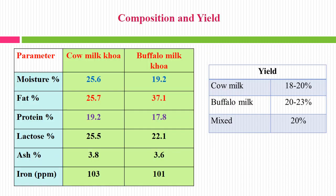Now we will see the composition and yield of Khoa. In the left side table, moisture content for cow milk Khoa is 25.6% and for buffalo milk 19.2%. Fat percent in cow milk Khoa is 25.7% and from buffalo milk it is 37.1%. Protein is 19.2% from cow milk and 17.8% from buffalo milk. Lactose is 25.5% from cow milk and 22.1% from buffalo milk, and iron 103 and 101 ppm respectively.